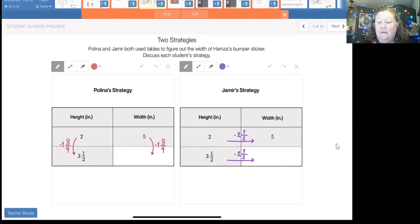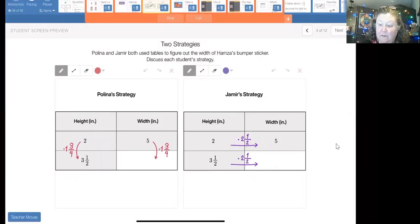Now the example I first set up in the first example was putting the height over the width or the width over the height. In this example, we have the two heights and we're missing one of the widths. And I'm going to encourage you to look at this as a fraction, two over three and a half, and this is a fraction, five over a blank.